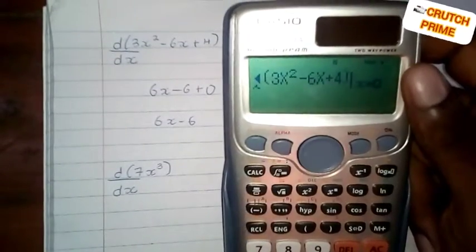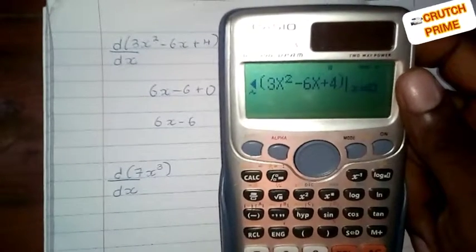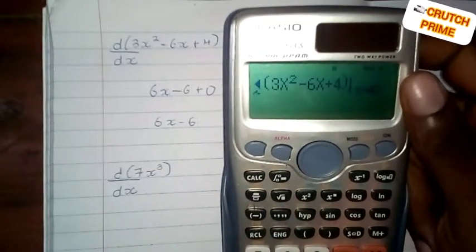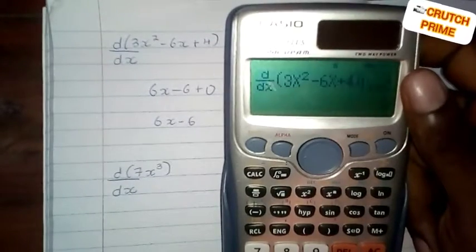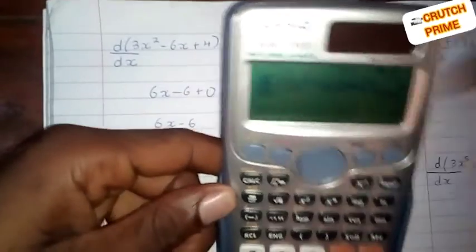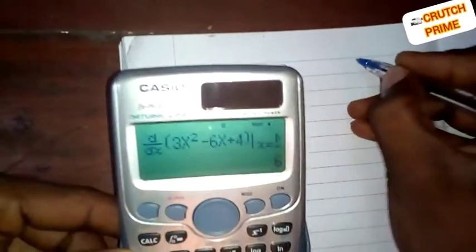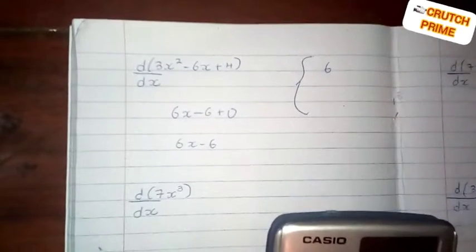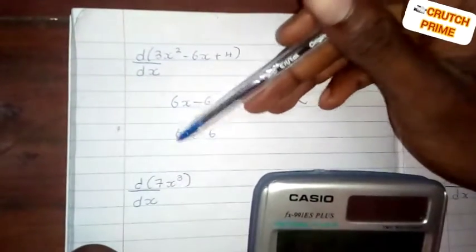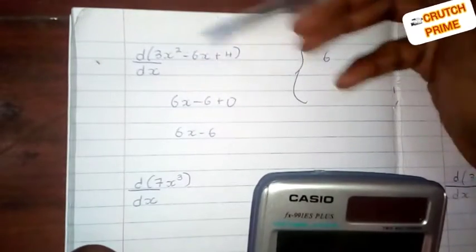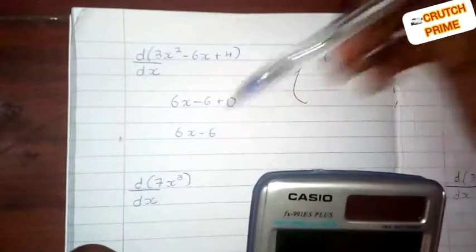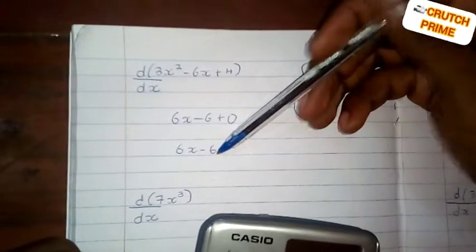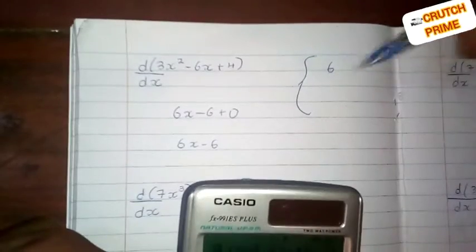When you use the calculator you can confirm the answer. We have to give the value as x tends to some number — let's say x tends to 2. The calculator gives us 6. So now, if we substitute x equals 2 into our answer 6x minus 6, using the same value of 2 that we used in the calculator, if it gives us 6 then we know our answer is correct.